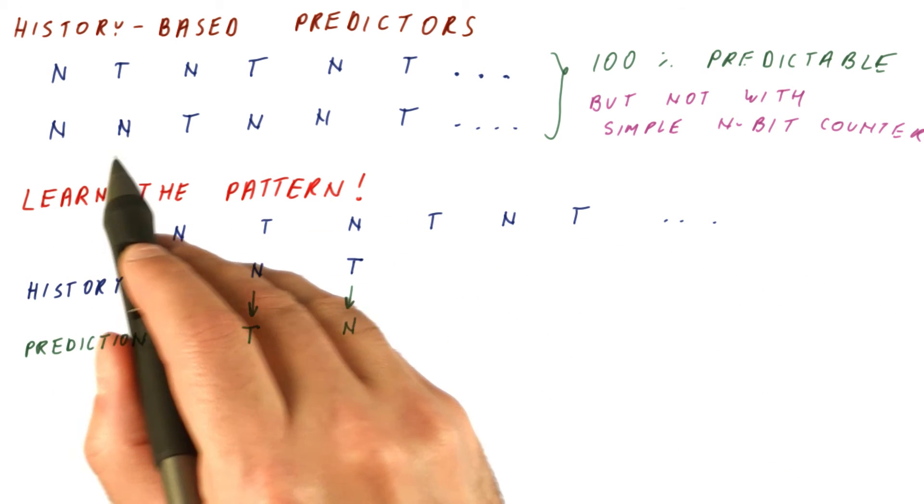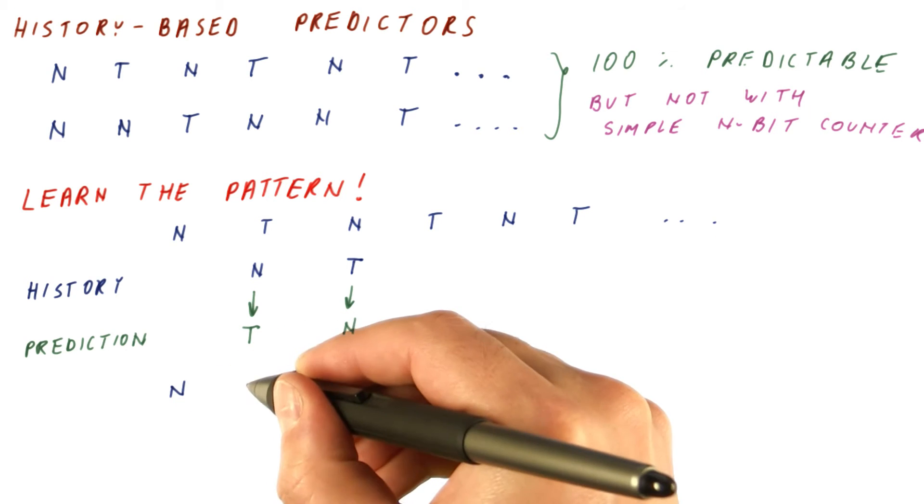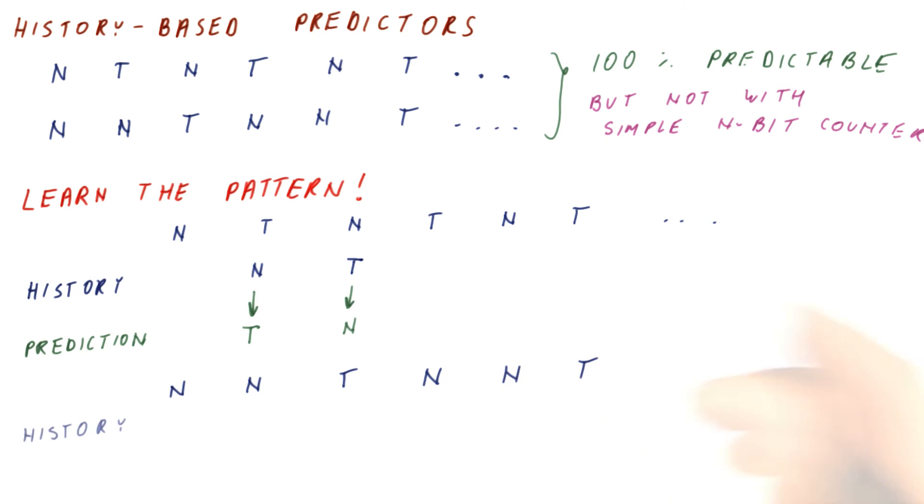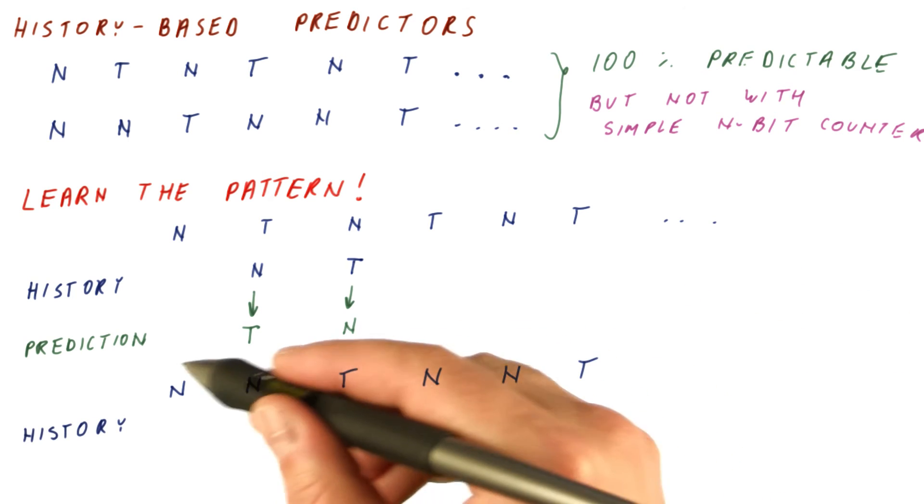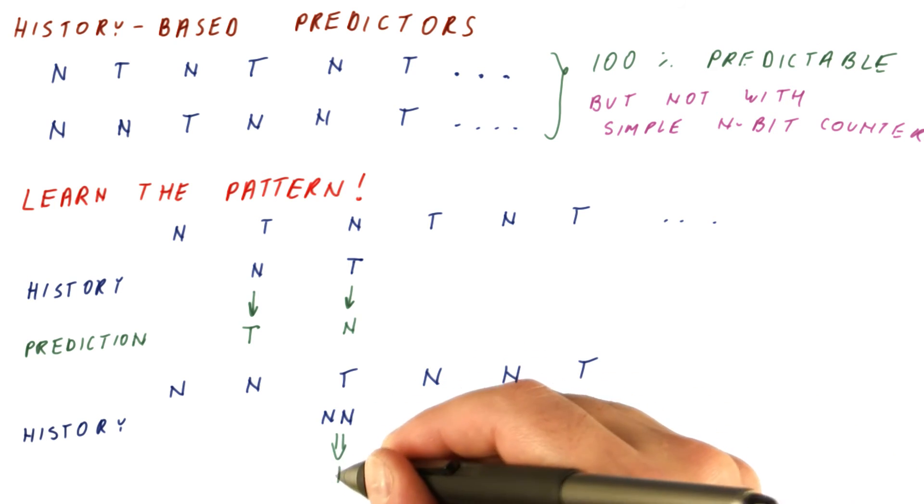Let's now look at this NNT branch. In that case, we have not taken, not taken, taken, not taken, not taken, taken. The history now needs to consider the last two decisions. So when we see not taken, not taken, we should be predicting taken.